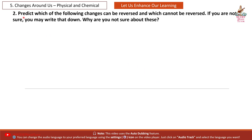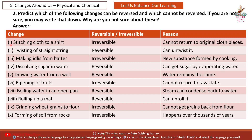Question 2: Predict which of the following changes can be reversed and which cannot be reversed. If you are not sure, you may write that down. Why are you not sure about these? Answer — 1st change: stitching cloth to a shirt — IRREVERSIBLE. Reason: cannot return to original cloth pieces.